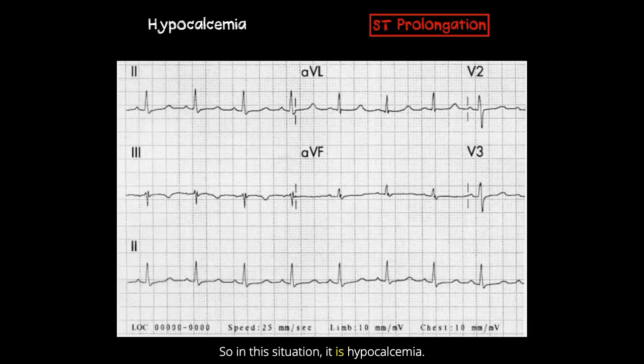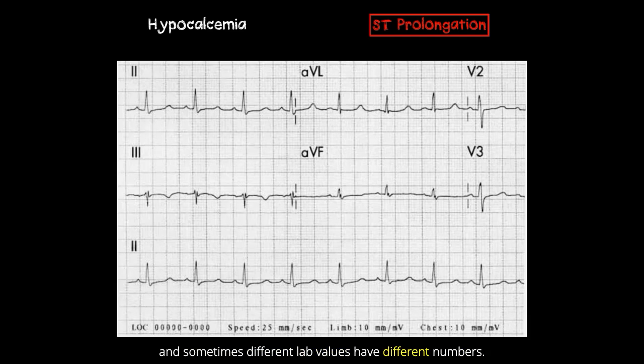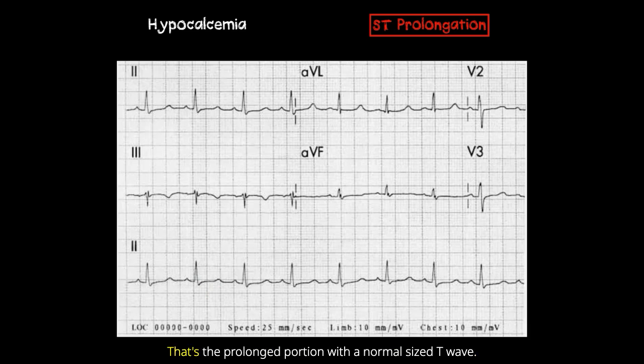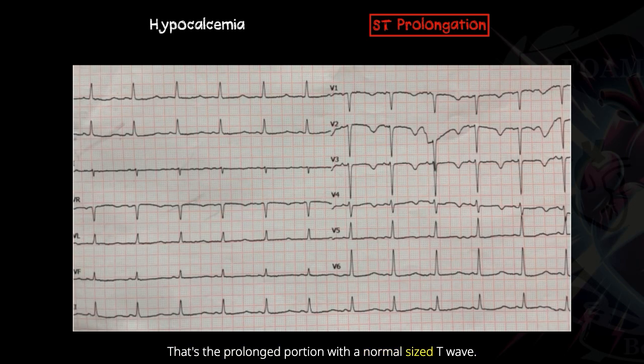In this situation, it is hypocalcemia. Normal calcium values are typically 9 to 11, though different labs may use different numbers. In hypocalcemia, you're going to get a prolonged QT interval. We know it's low calcium because, as you can see here, that ST segment is actually pushed out — that's the prolonged portion — with a normal-sized T wave.